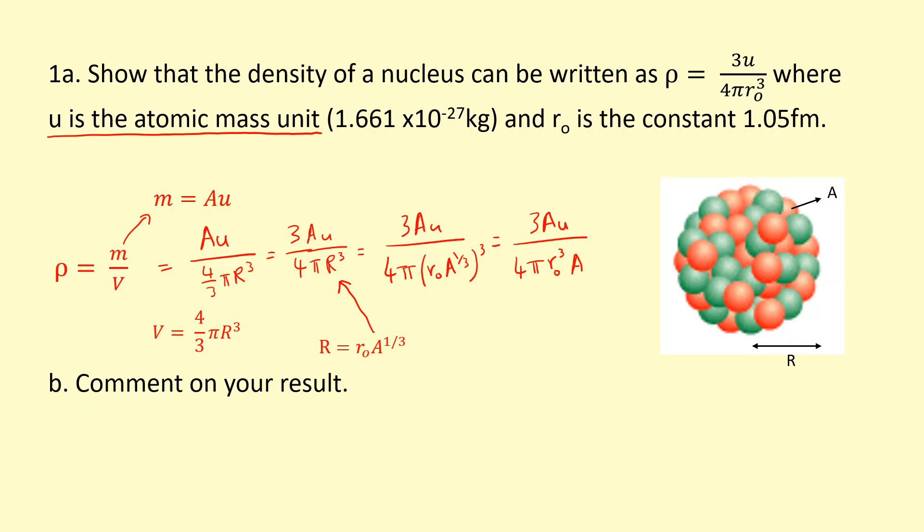So what's going to happen now? You can notice that the A from the top and the A from the bottom will cancel out, giving us density equals 3u over 4 pi r0 cubed.